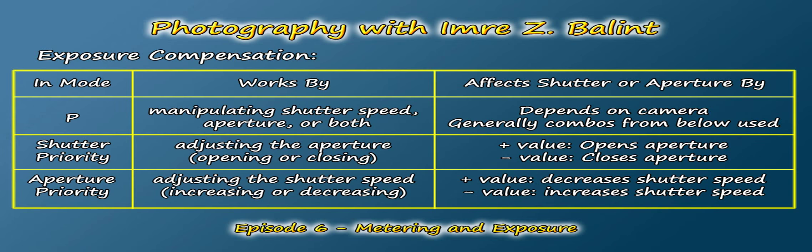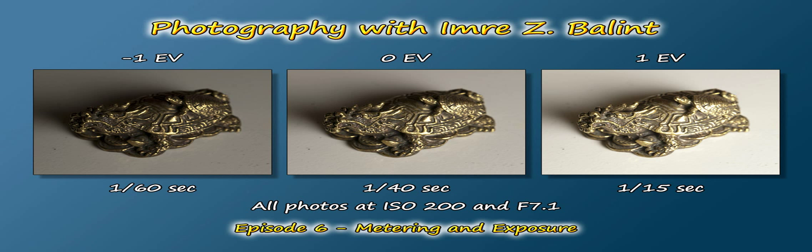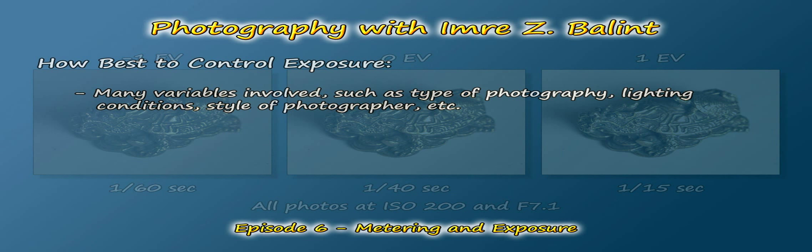You'll note on this table how the aperture and shutter speed are affected by changing the exposure compensation setting. These three images should give you a good idea of what this looks like when you take photos. I shot these pictures in aperture priority with the same f-stop and sensitivity, so you can easily see how the exposure compensation affected the shutter speed in each case.